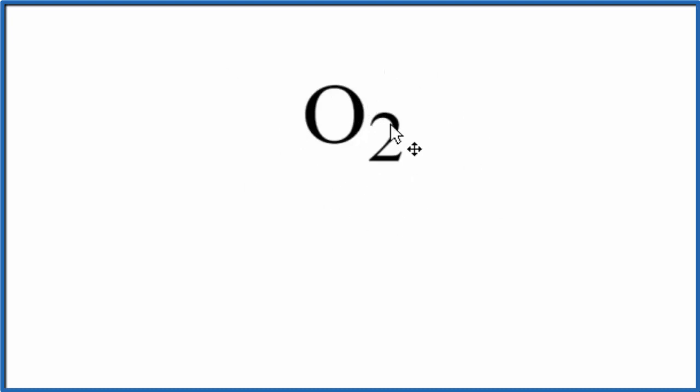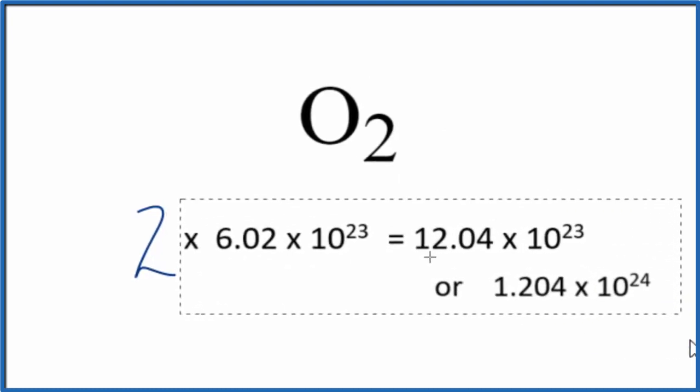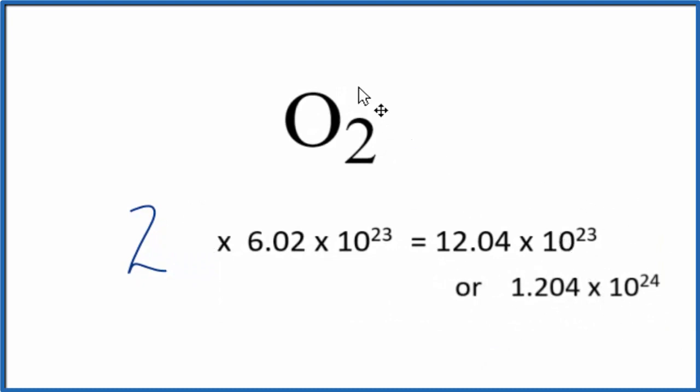Sometimes you'll be asked to figure out the number of atoms of oxygen in one mole of oxygen gas. We have two oxygen atoms here, and we multiply that by Avogadro's number. This tells us the number of atoms in one mole of oxygen gas, O2.